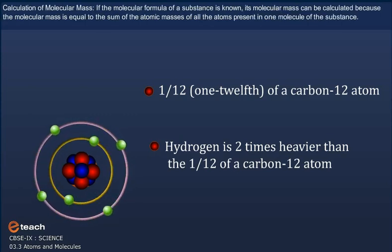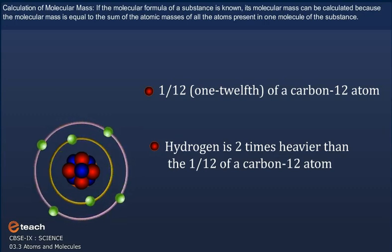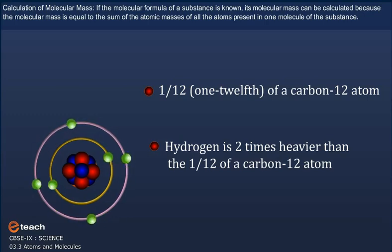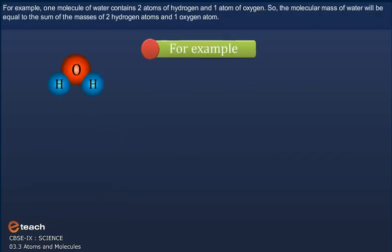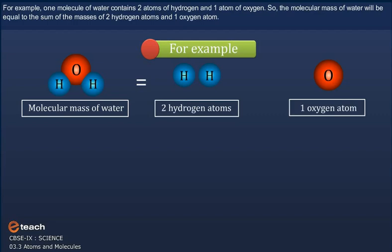Calculation of molecular mass: if the molecular formula of a substance is known, its molecular mass can be calculated, because the molecular mass is equal to the sum of the atomic masses of all the atoms present in one molecule of the substance. For example, one molecule of water H2O contains two atoms of hydrogen and one atom of oxygen. So the molecular mass of water will be equal to the sum of the masses of two hydrogen atoms and one oxygen atom.